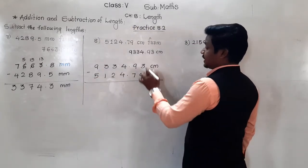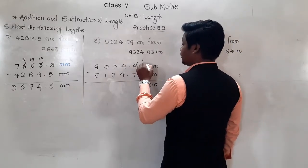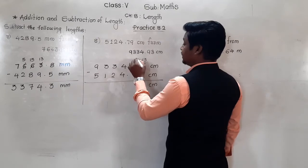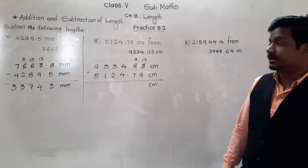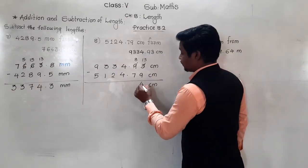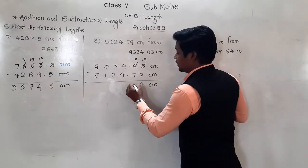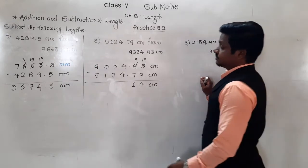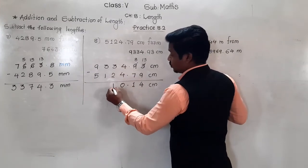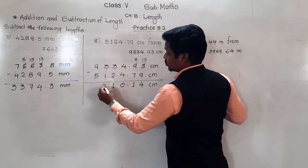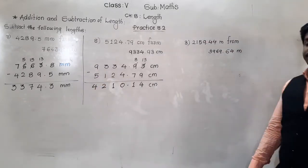Subtract. 3 minus 9, not possible. So from this 9 take 1 borrow here. This 9 will remain 8. 13 minus 9 is 4. Then 8 minus 7 is 1. Then decimal point. 4 minus 4 is 0. 3 minus 2 is 1. 3 minus 1 is 2. And 9 minus 5 is 4. 4210.14 centimeter.